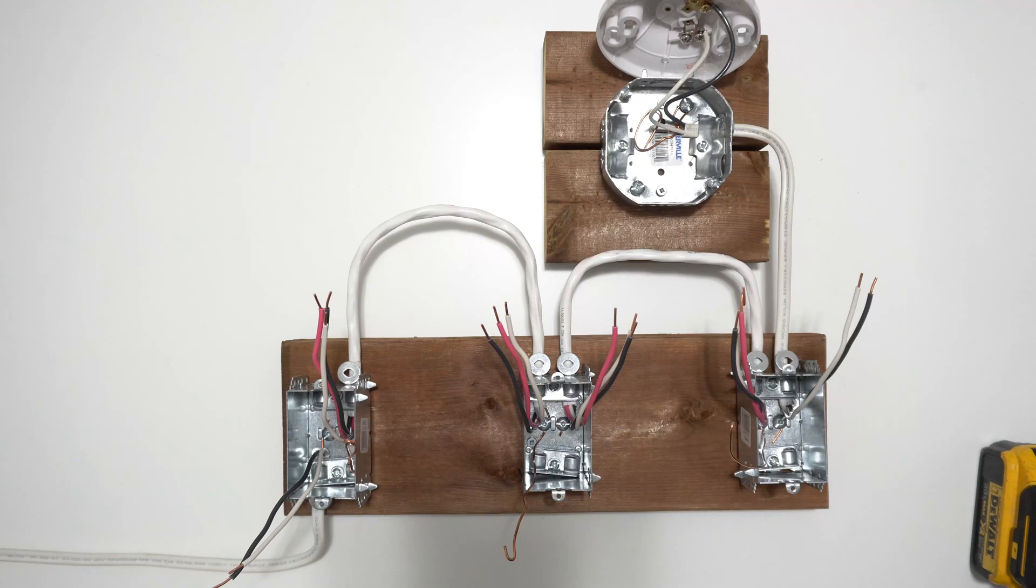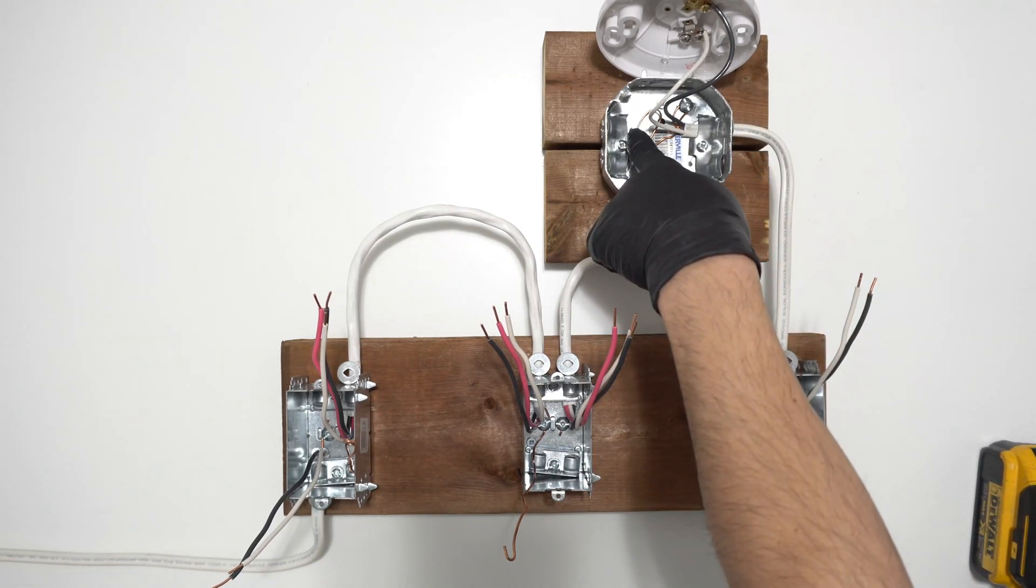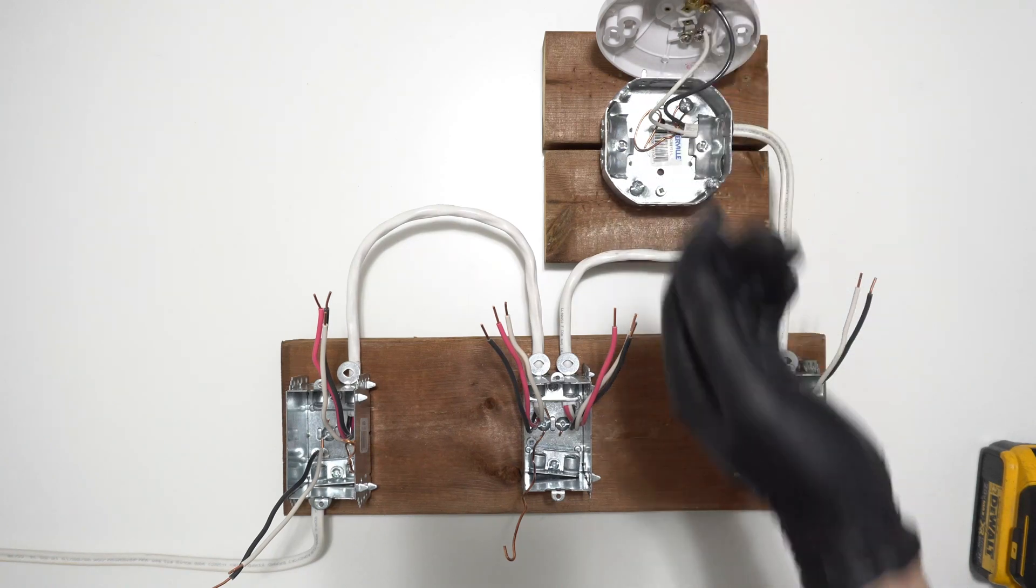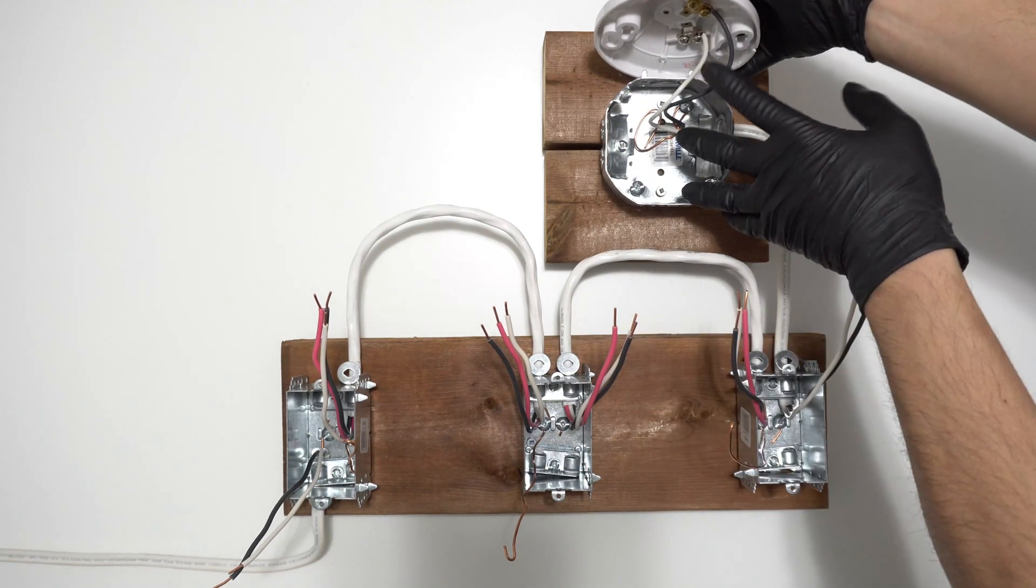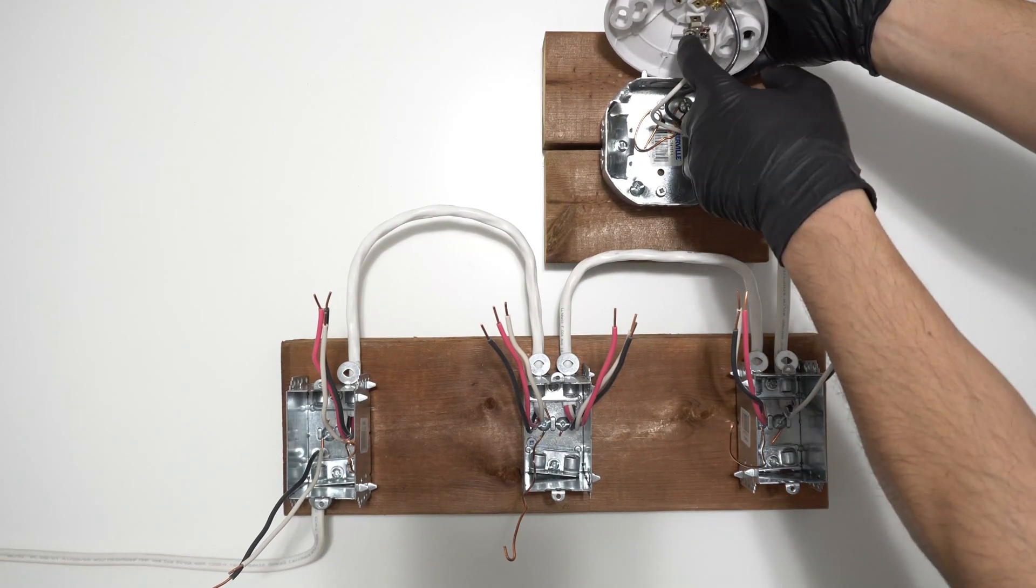Installing the light fixture is very easy. The ground wire is bonded to the box and the ground wire to the light fixture if applicable, and then the black wire is onto the brass and the white wire to the silver screw.